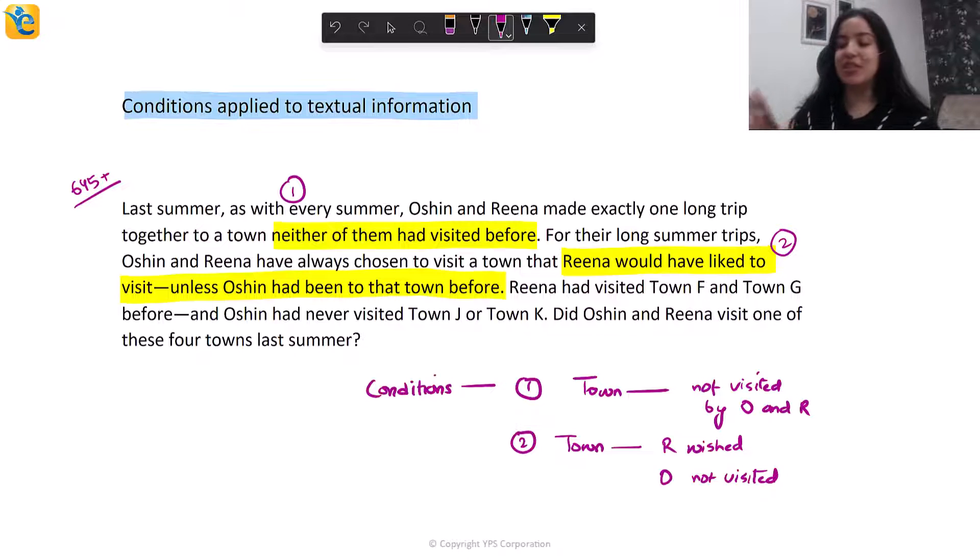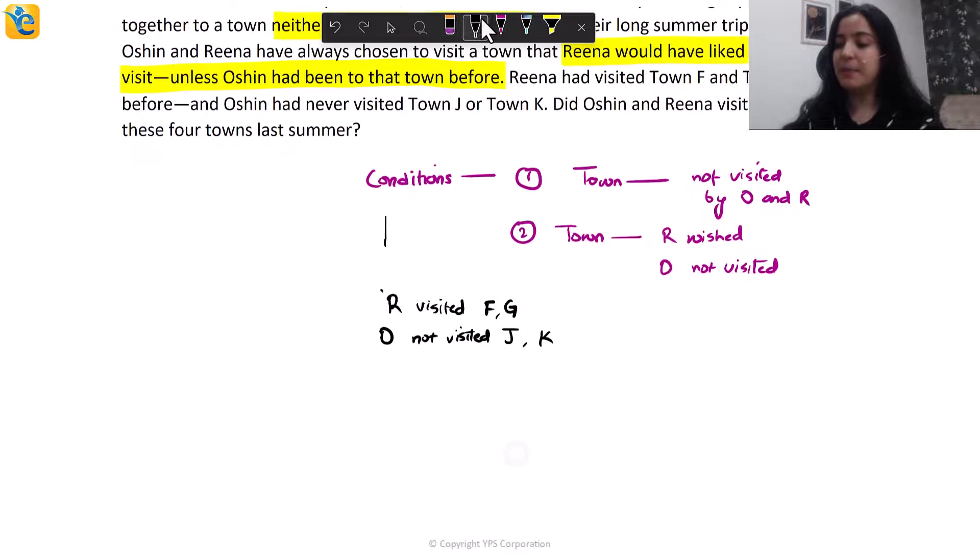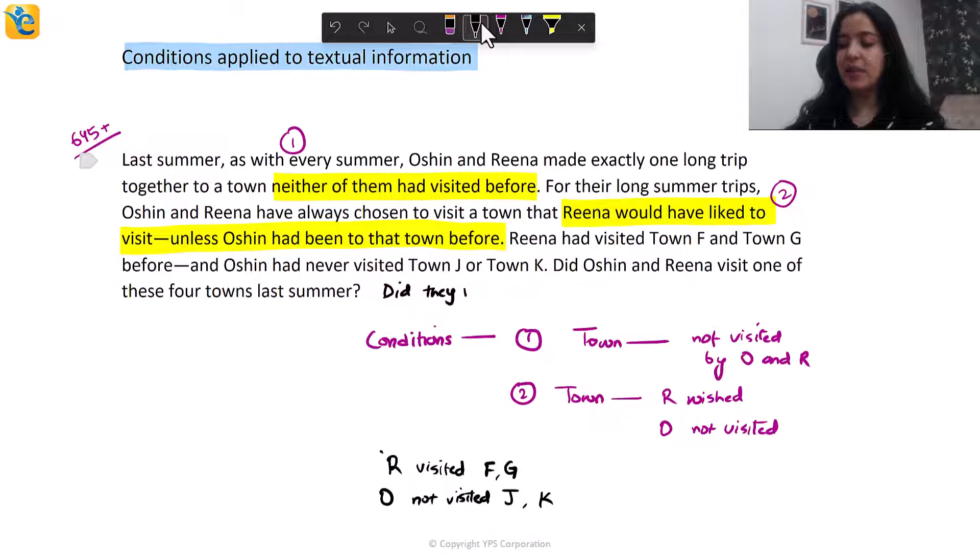So what this is saying is that your town should have two characteristics. One, R wished to visit this place and then O had not already visited this place. These are the two conditions we have here. Then it goes on to say Rina had visited town F and G, Ocean had not visited J or K. So it's actually talking about four different towns here and we have information about them. Now this passage, if I write down, if I write on the given information also from here, you will see R visited F, G, O not visited J, K. I'm just putting this in shorthand. You don't have to be very grammatical. This is the information we have. So this is what I know. Now the question asked, did they visit one of these four towns last summer? That means did they visit F or G or J or K. Now see what you've done. All of this together is the translation of this passage in your own words. Now we have the given information, we have the final question, everything written here.